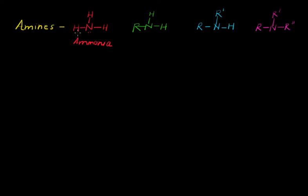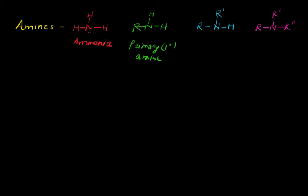One can classify amines based on the replacement of hydrogen atoms present in ammonia. If one hydrogen atom is replaced by any alkyl group or aryl group, the compound is known as a primary amine. You can see clearly that this hydrogen is replaced by the R group.